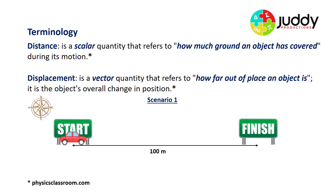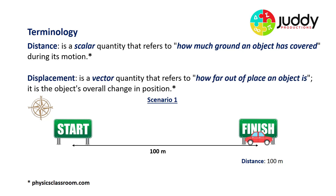Let's consider a vehicle that starts and then travels to a finished position 100 metres to the east. To calculate its distance, we want to find out how much ground that vehicle has covered. From that visual we can clearly see the distance is 100 metres — a number and a unit in metres. That's the scalar measurement. Now the displacement is how far out of place an object is, comparing its finishing position from its starting position. The vehicle has been displaced 100 metres to the east.